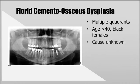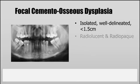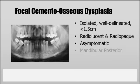Florid cementoosseous dysplasia is different from periapical cementoosseous dysplasia in that it usually involves multiple quadrants. It's most often seen in African-American women older than the age of 40, but the cause is also unknown. Most of the time this condition does not require treatment and is asymptomatic. However, in an edentulous patient these lesions can perforate the mucosa, resulting in an increased risk of osteomyelitis — so in that rare case, surgery would be indicated.